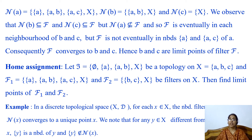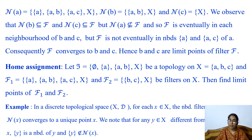We now discuss another example. In a discrete topological space (X, T), for each point x in X, the neighborhood filter N(x) converges to a unique point x. Because N(x) consists of all neighborhoods of x and so it contains all neighborhoods of x, meaning N(x) converges to point x. Also, for any y in X different from x, since the singleton {y} is a neighborhood of y and singleton {y} is not a member of N(x), we can say that N(x) converges to a unique point x.